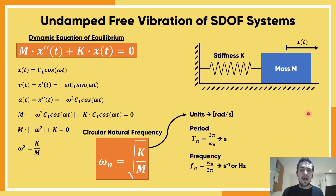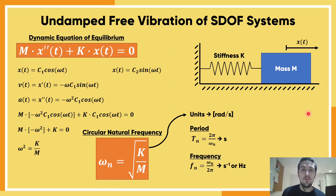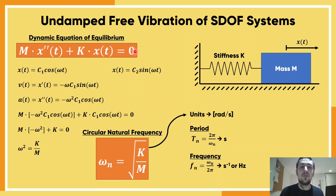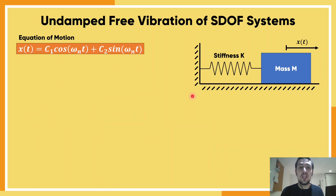It is important to remember that the same derivation works for a sine wave. Repeating the derivation with a sine wave gives the exact same conclusion: this only works if the circular natural frequency is the square root of stiffness divided by mass. Since both cosine and sine are solutions to the dynamic equation of equilibrium, their sum is also a solution. This is the general form of our equation of motion.